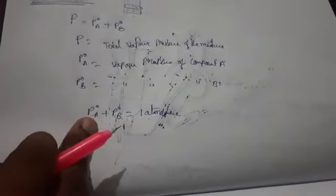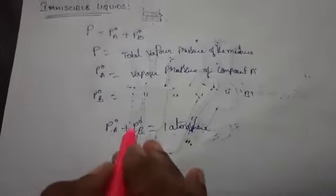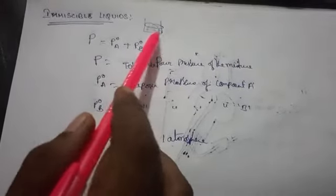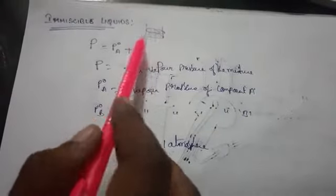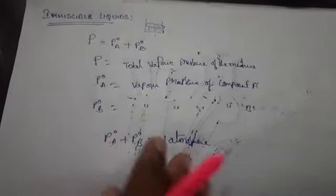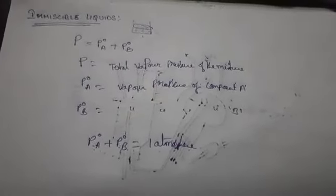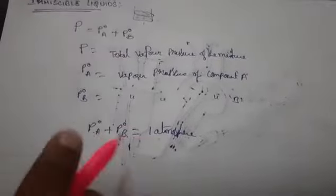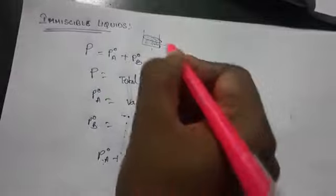When you do distillation of this liquid, the boiling point is constant until one component is removed. If component B is removed during distillation, then A will remain and the boiling point will increase. At the boiling point of the mixture, the vapor pressure of each liquid is always proportional to the number of moles.